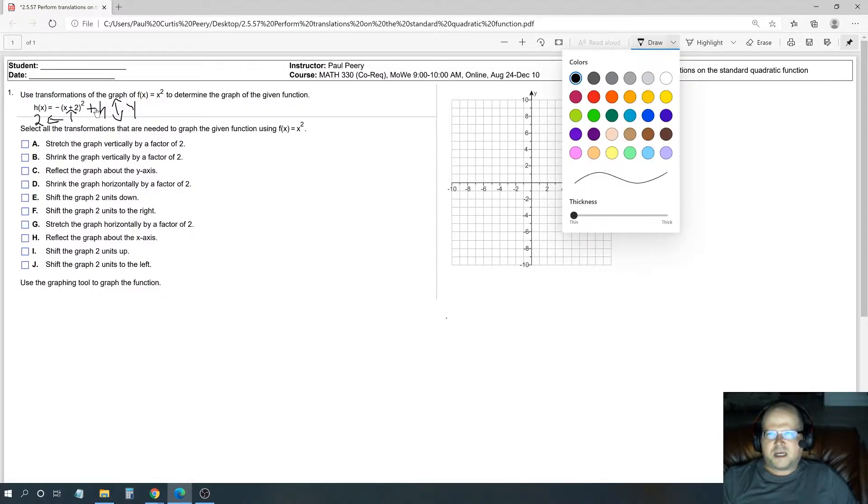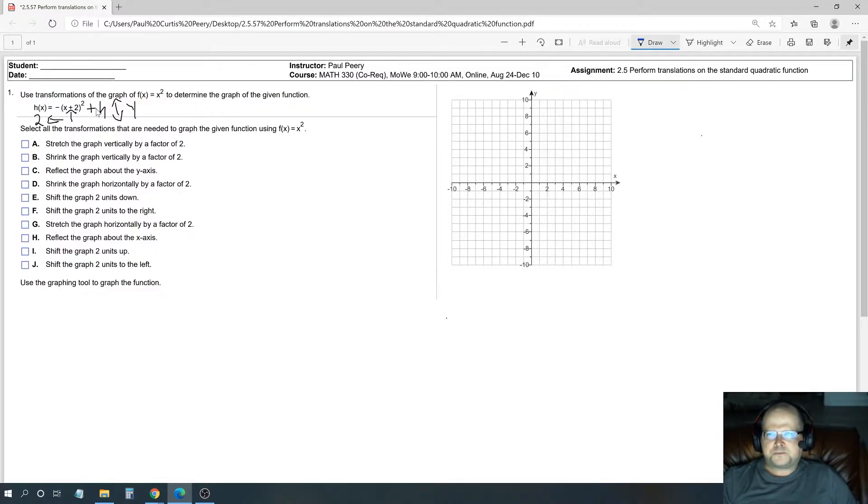Just to make this a better illustration of what it looks like, let's graph this, the parent function. So the parent function would look something like this. It would go up, up, and I just keep going up, up, up. That's more like what the parent function looks like.